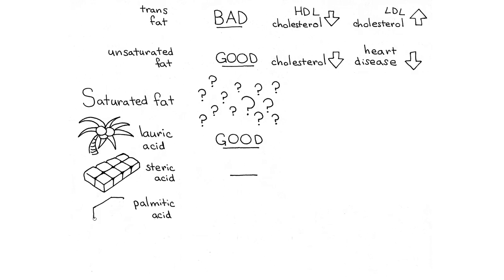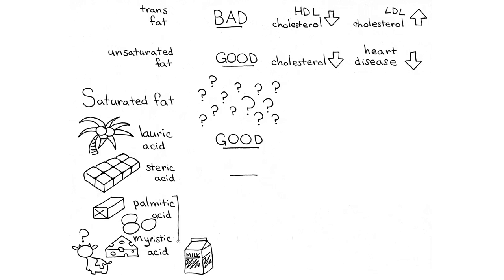Palmitic acid, found in palm oil, butter, and eggs, and myristic acid, found in cheese, milk, butter, and beef, are the sources of most of the problems caused by saturated fat. These fats increase the amount of bad LDL cholesterol.